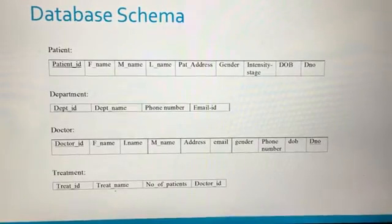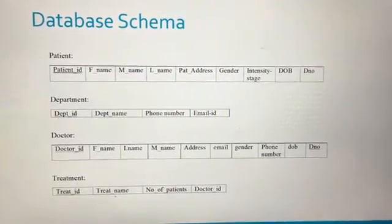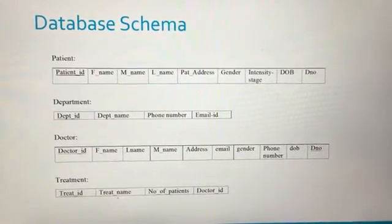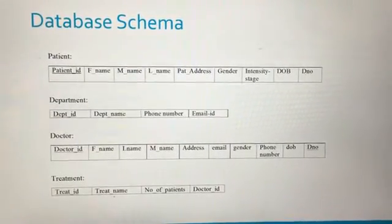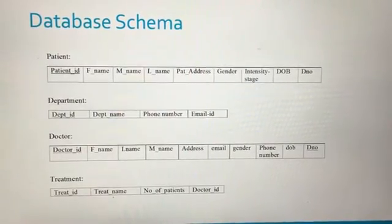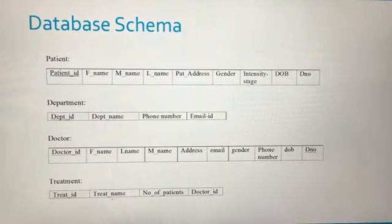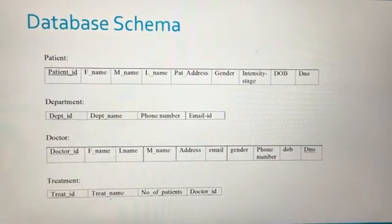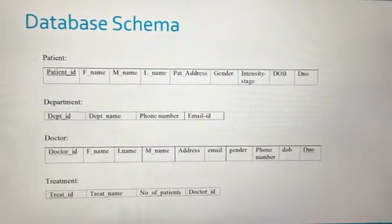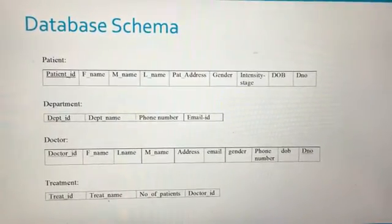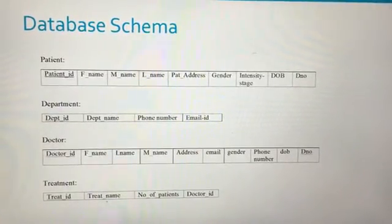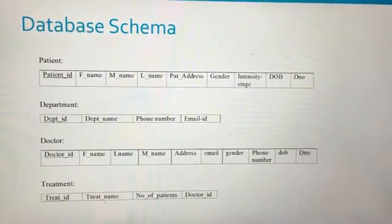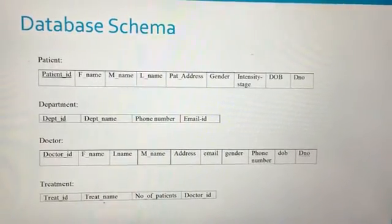The following is our database schema. For instance, a patient has a Patient ID which is a primary key because it has only unique values. The department has a Department ID which is also a primary key. There is a foreign key — department number — which references the Department ID in the Department table, so any changes to the department number in the Doctor table are reflected in the Department ID of the Department table.